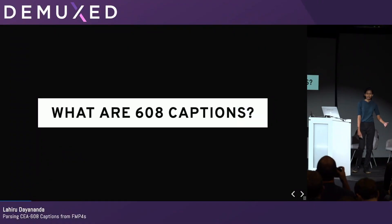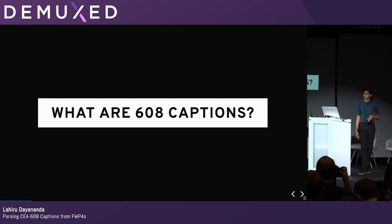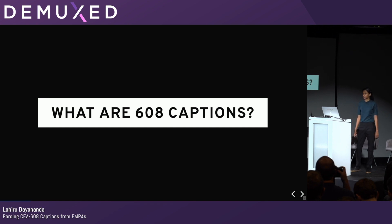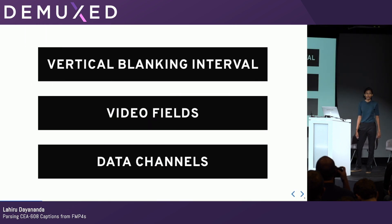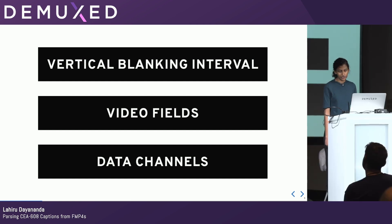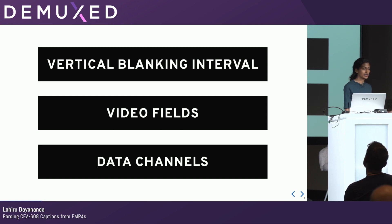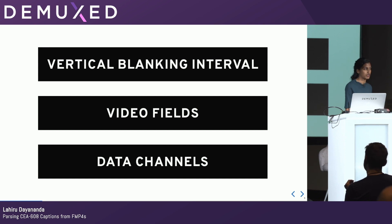When I first looked at the spec, I realized I didn't actually understand what 608 captions were. I knew they were included in the video data, unlike other caption formats I was familiar with. But there were things I didn't understand referenced in the spec — things like the vertical blanking interval, video fields, and data channels. Turns out the spec is actually a hardware specification. It's based on analog TV, hardware encoders and decoders. So if you look at it from the perspective of software, there are just some things that don't quite make sense anymore.